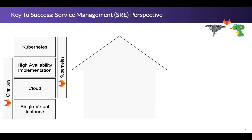As you look at this stack and go up it, certain things start to increase. One is the smallest sufficient scaling: with a single virtual machine instance, you can use one VM, keep storage there, ensure a rock-solid backup, and have a minimal footprint. As you move up, that grows. High availability implementation means several more instances, and Kubernetes itself will suggest a minimum of three instances. So the smallest possible computing cost grows as you move up the stack.